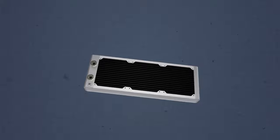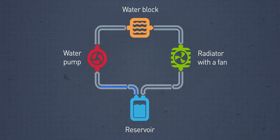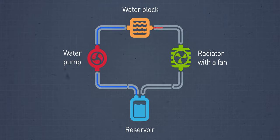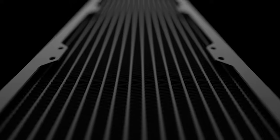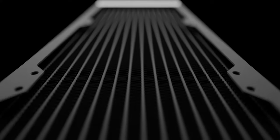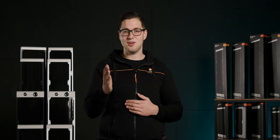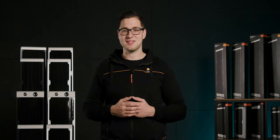So to summarize: the heat is carried by the coolant from the water blocks to the radiator. When the liquid reaches the radiator, its heat is transferred to the narrow flow channels and fins, and subsequently to the air passing through the radiator, ultimately lowering the temperature of the coolant and your PC components.